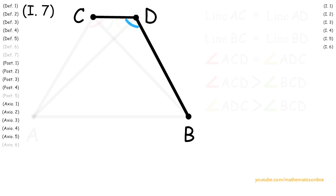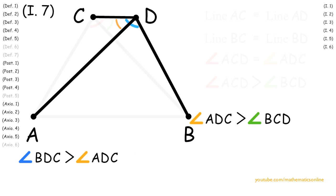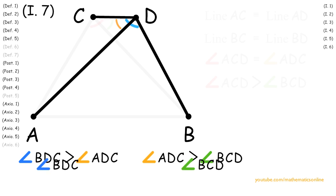Next, looking at angle BDC and angle ADC, we can see that by Axiom 5 angle BDC is greater than angle ADC. So now since angle BDC is greater than angle ADC and angle ADC is greater than angle BCD, then angle BDC must be greater than angle BCD.